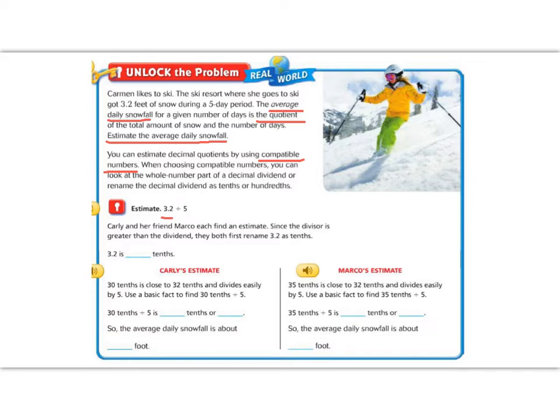So Carly and her friend Marco each find an estimate. Since the divisor is greater than the dividend, they both rename 3.2 as tenths. So instead of calling it 3.2, I'm going to call it 32 tenths. So I can put my decimal back in later.